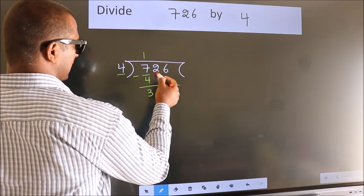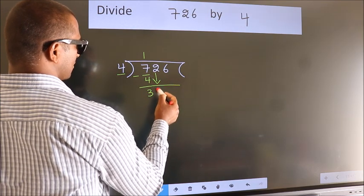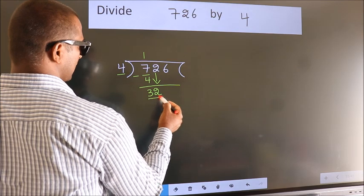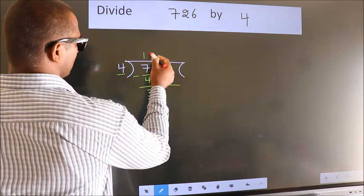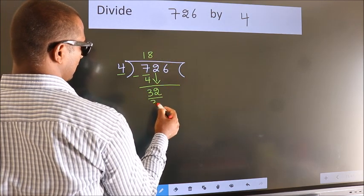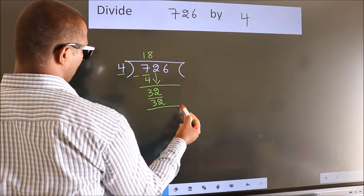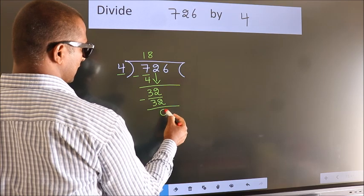After this, bring down the beside number. So 2 down. So 32. When do we get 32 in the 4 table? 4 times 8 is 32. Now we subtract. We get 0.